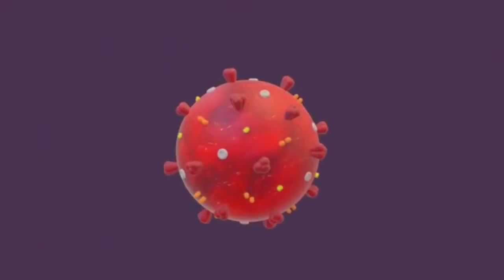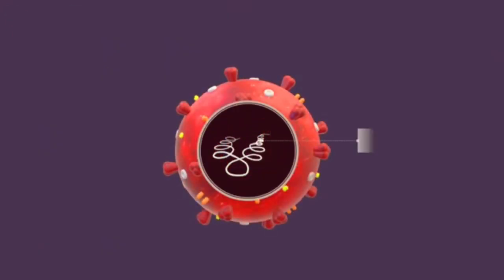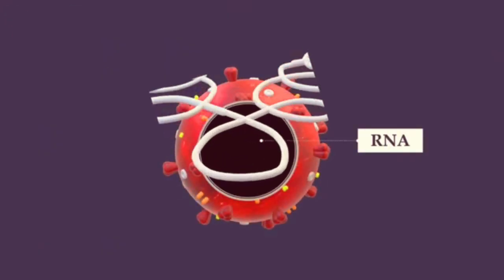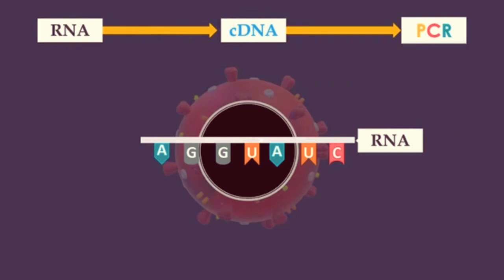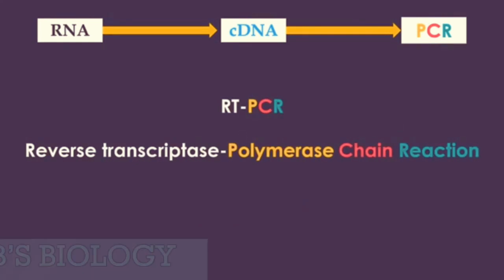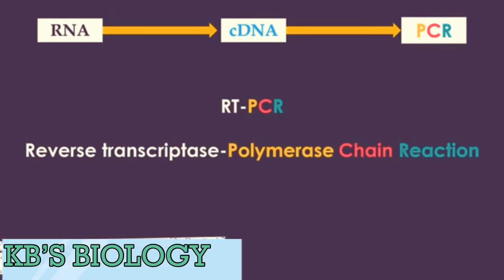Coronaviruses contain an extraordinarily long single-stranded RNA genome. To detect these viruses with PCR, RNA molecules must be converted into their complementary DNA sequences by reverse transcriptase. Then the newly synthesized DNA can be amplified by standard PCR procedures. This approach is universally known as RT-PCR.